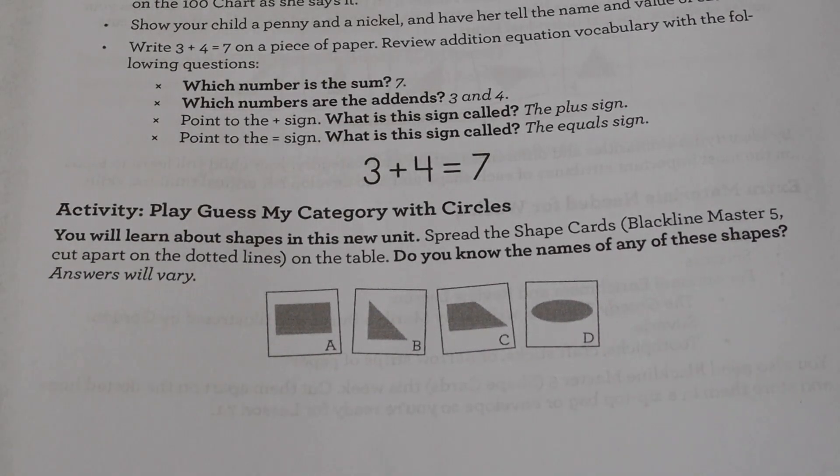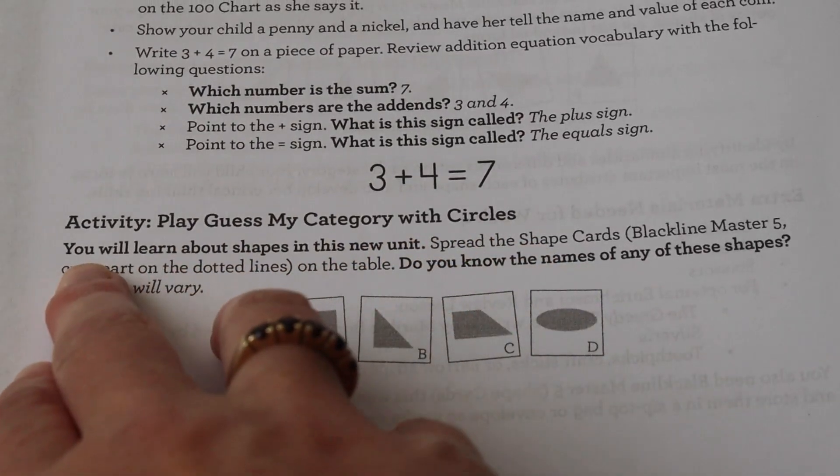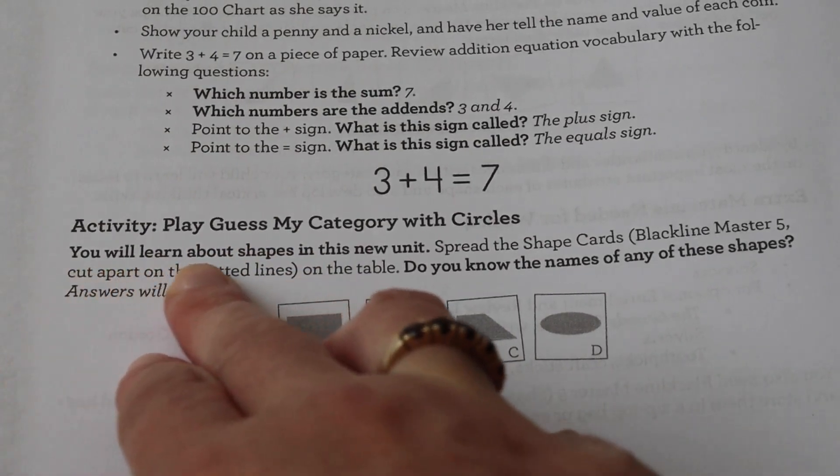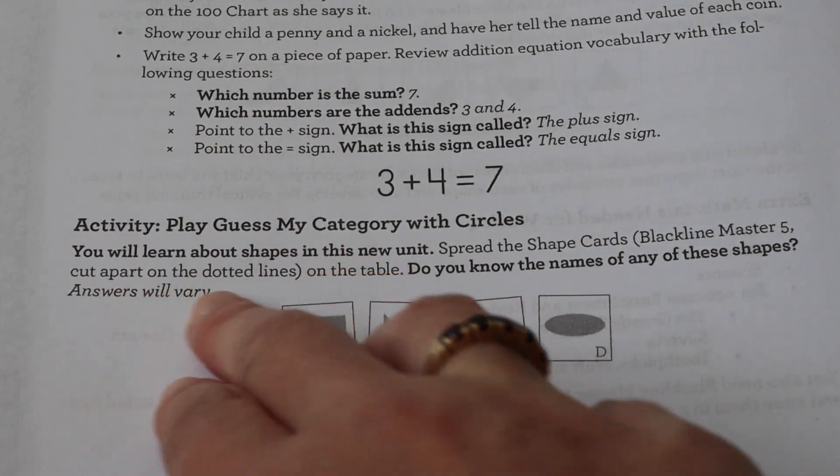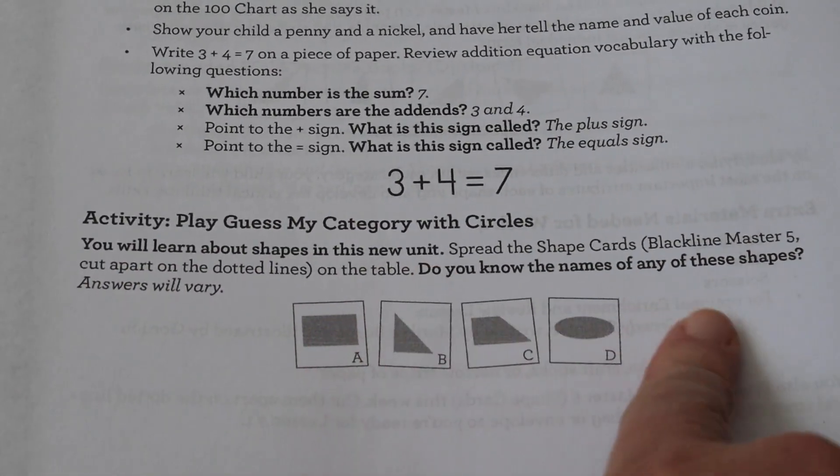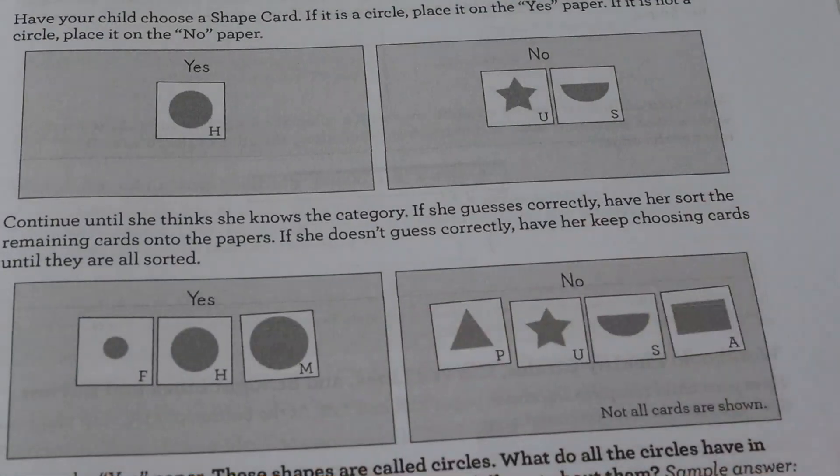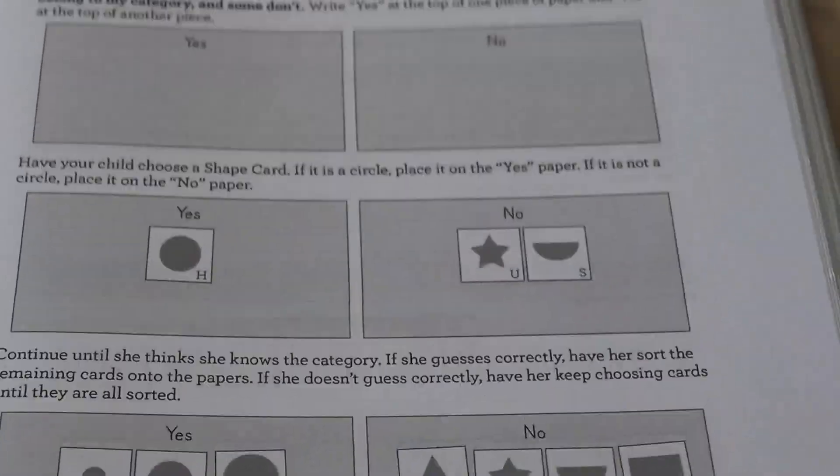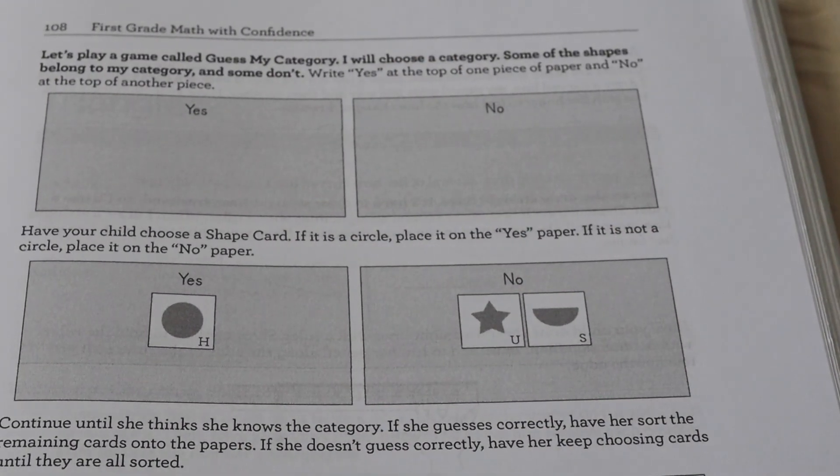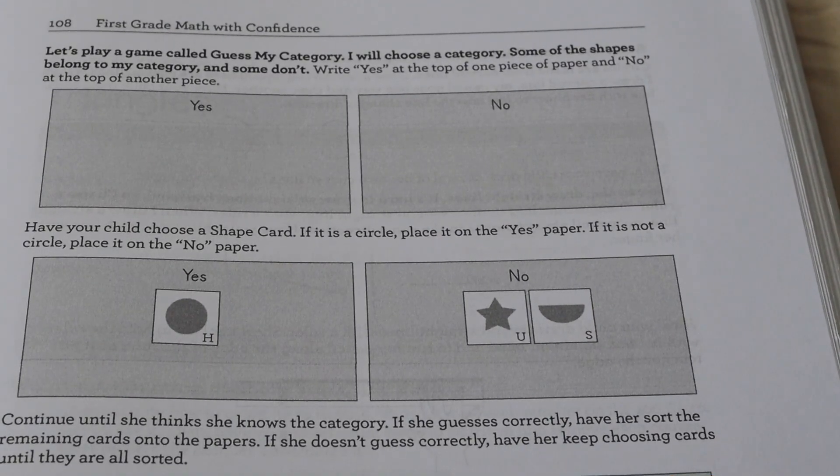And then it moves on to the actual lesson for the day. So this is new information that your child has not learned yet. So you're going to play Guess My Category with circles. So here the text that is bolded is what you read to your child. The regular text is to you, the parent. So here we're talking about the shapes. And then here is the game. So it's saying, let's play a game called Guess My Category. I will choose a category. Some of the shapes belong to my category and some don't.